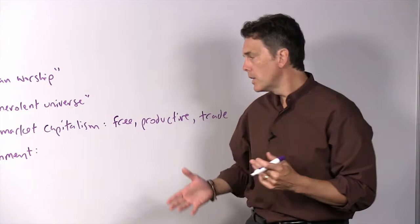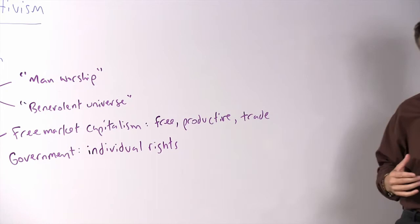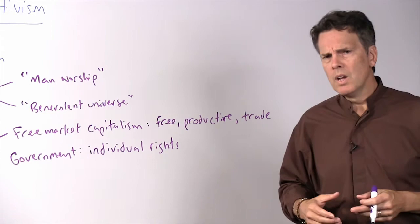And so Rand believes that there's a proper form of government if it is devoted to the protection of individual rights. Each person has the right to their own life. We don't belong to society. We don't belong to the king or government. Every individual has freedom rights.